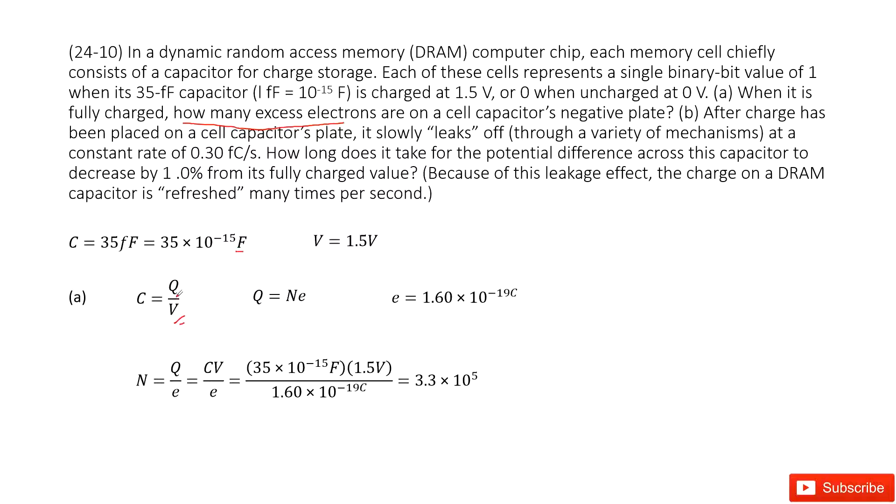Capacitance equals the charge divided by the potential difference. Now this charge comes from the number of n electrons. For one electron, it carries one unit of fundamental charge, e.